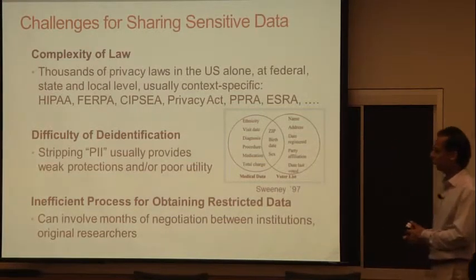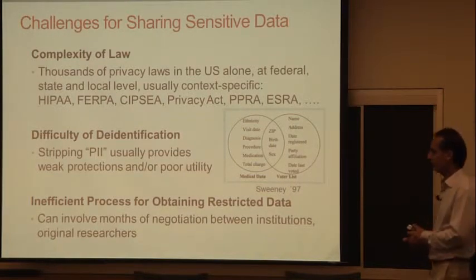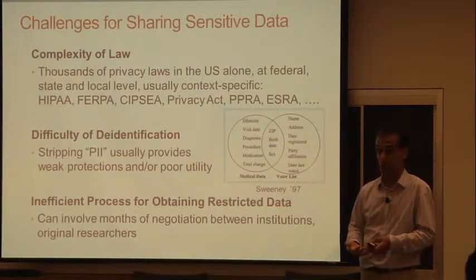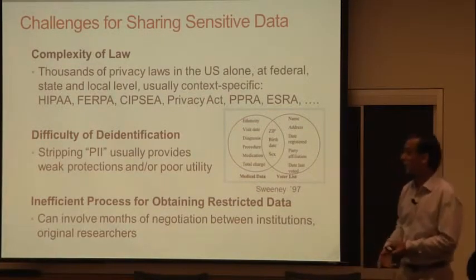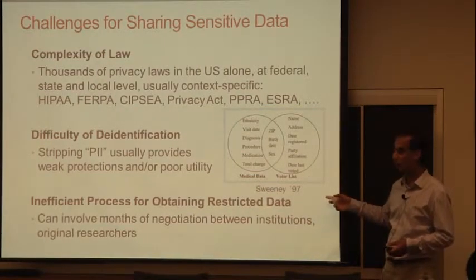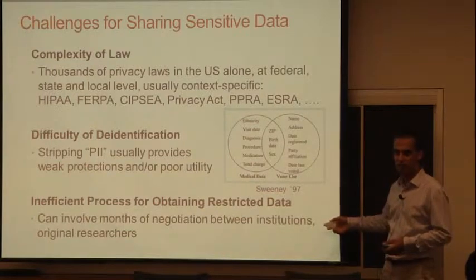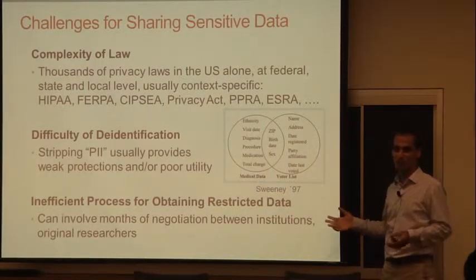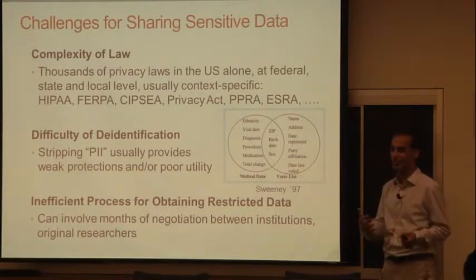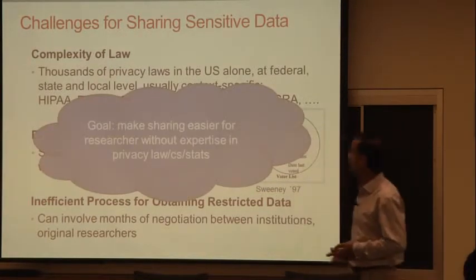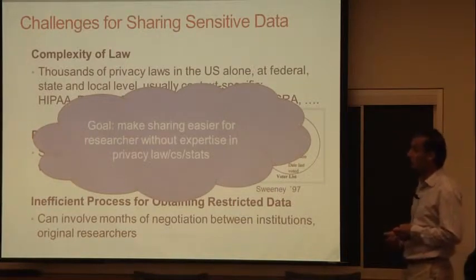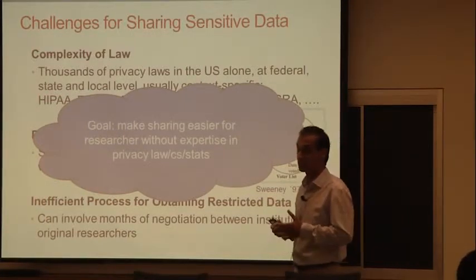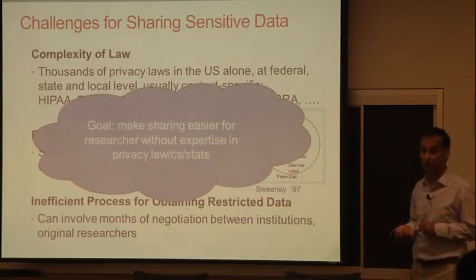Finally, for a dataset deemed privacy-sensitive, the access process can be very lengthy and arduous. People still have the idea that other researchers should be able to access the data by applying and showing they've obtained IRB approval. For MOOC data coming from Harvard and MIT, for example, six months of negotiation between institutions is not unheard of. That's a long delay to put into someone's PhD when they're trying to get their hands on a dataset. So we want to try to make sharing easier for non-expert lay researchers — meaning they shouldn't need expertise in data privacy, computer science, statistics, or law to deal with their privacy-sensitive data.